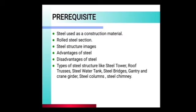In the previous lecture, we learned about steel used as a construction material, rolled steel sections, steel structure images, advantages of steel, disadvantages of steel, and types of steel structures like steel tower, roof trusses, steel water tank, steel bridges, gantry and crane girder, steel column, and steel chimney.